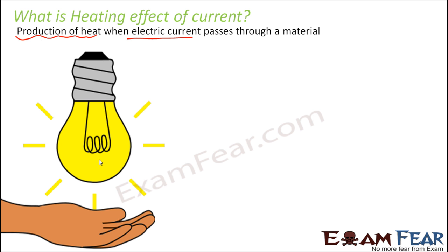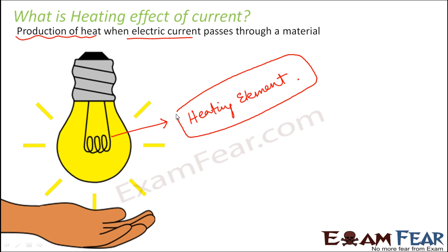It is not necessary that all materials will show the heating effect. This effect is actually seen due to the presence of a heating element. In the case of a bulb, the filament acts as the heating element, and the presence of a heating element is a must. A heating element can be defined as a coil of wire that has a very high melting point and does not get oxidized when heated. Only appliances containing such elements, when connected to an electric supply and switched on, will get heated up.